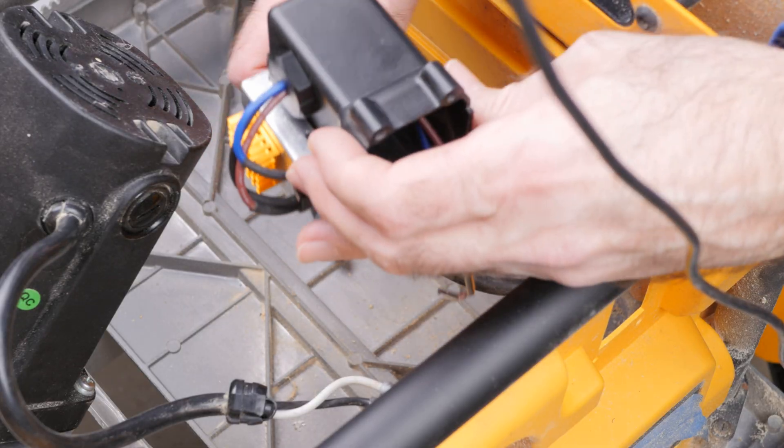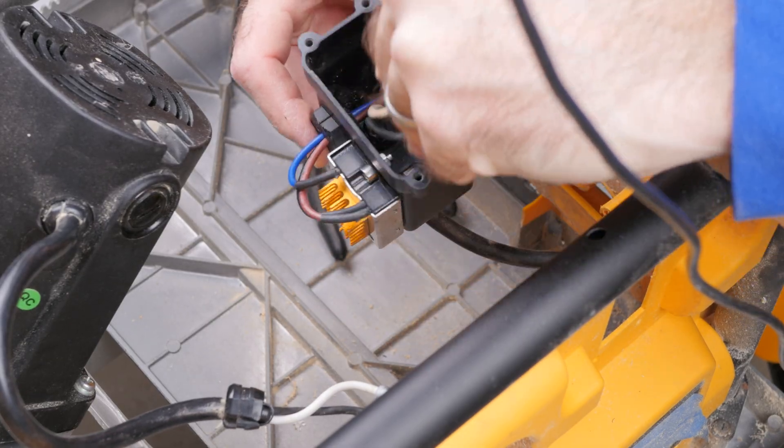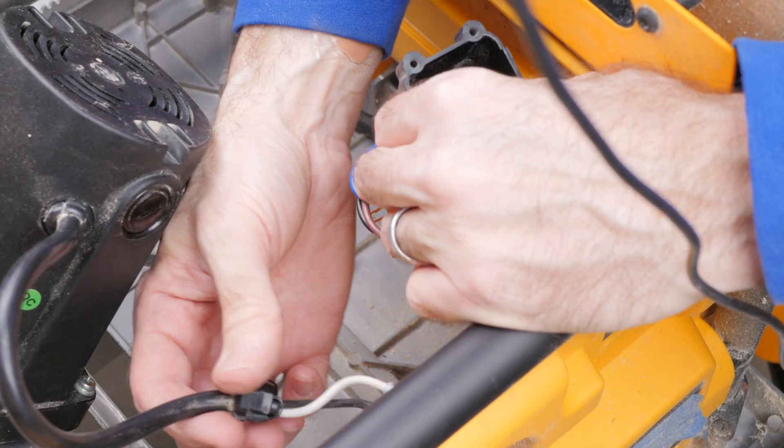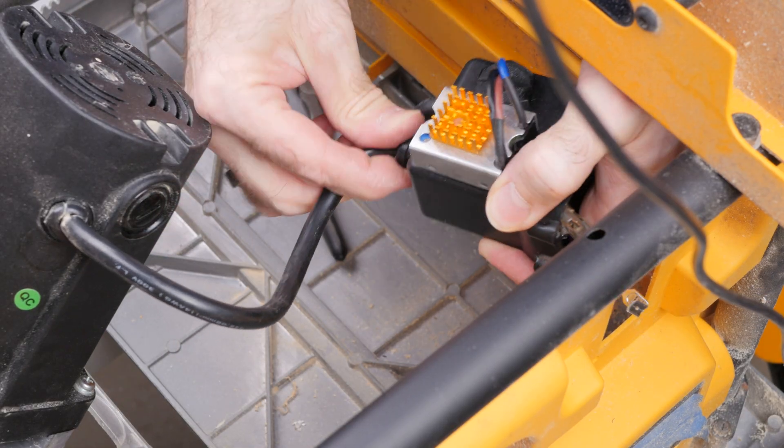Back at the saw, the mains input lead grommet is reconnected to the bottom position on the switch box and the motor lead grommet is connected to the top. Note that in this video the saw is turned upside down.